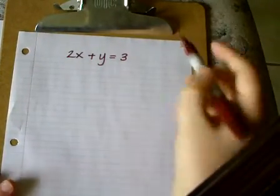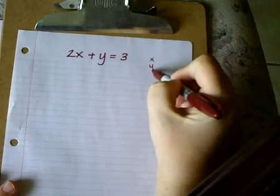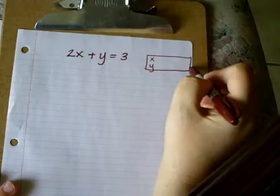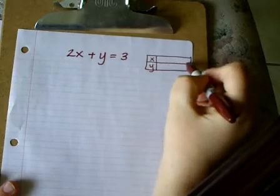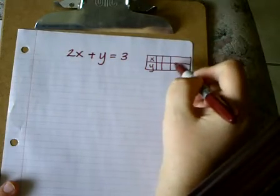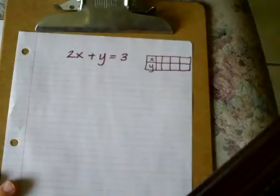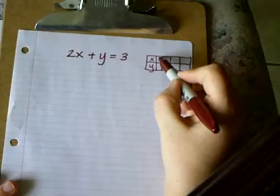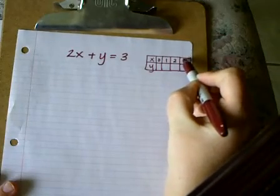2x plus y equals 3. Again, the same process. I'm just going to set up an xy table. Nothing fancy, just a place to keep my values together. And again, because my graph is little, I don't want to use very big numbers because it would be more difficult to graph. So I'm going to choose the numbers 0, 1, 2, and 3.